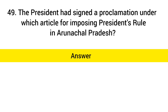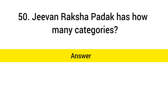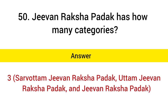The President signed a proclamation under which article for imposing President's Rule in Arunachal Pradesh? Answer: Article 356. Gallantry award G1 Raksha Padak has how many categories? Answer: Three — Sarvottam G1 Raksha Padak, Uttam G1 Raksha Padak, and G1 Raksha Padak.